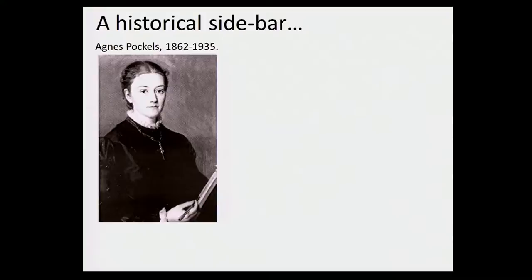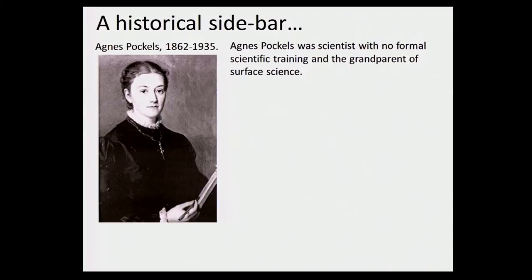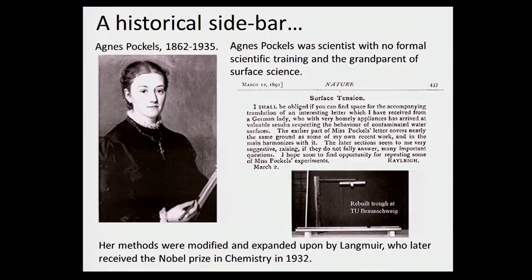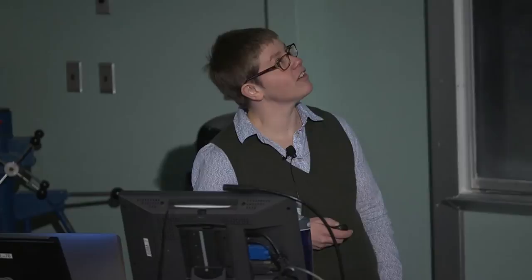A little bit of history: this whole field was begun by a woman, Agnes Pockels, who had no scientific training. She was doing experiments on materials she found in her kitchen, spent many years doing experiments, and tried to communicate her findings to the local scientific community but was ignored. Eventually she sent a letter with some of her results to Lord Rayleigh of Rayleigh Scattering, and he thought it was exciting enough to contribute to Nature, where it was published. She published several papers in Nature and is really the parent of the field of surface science. The instrument she built out of very simple materials was slightly modified by Langmuir and contributed to him getting the Nobel Prize in chemistry in 1932. It's one of the rare fields in science that starts off with a woman who is actually documented in history.